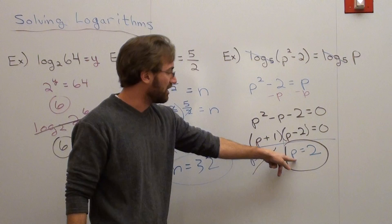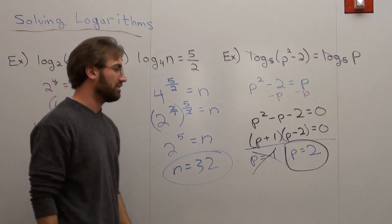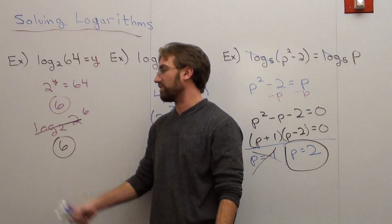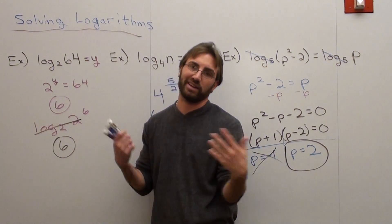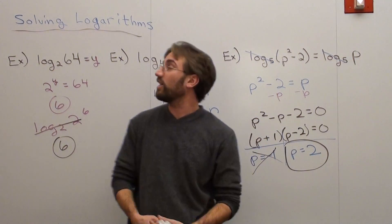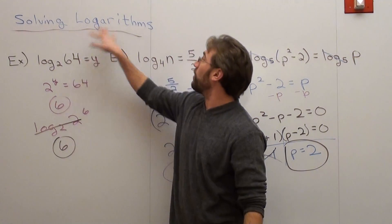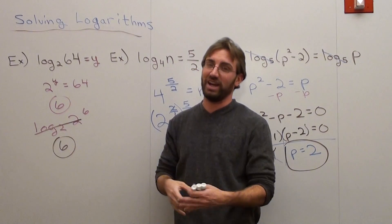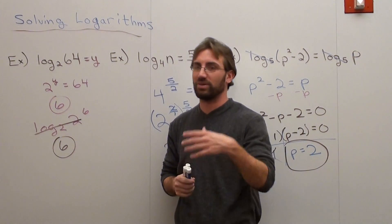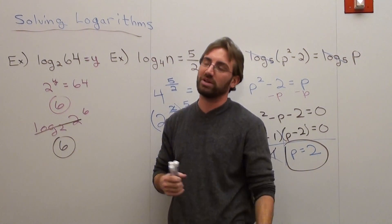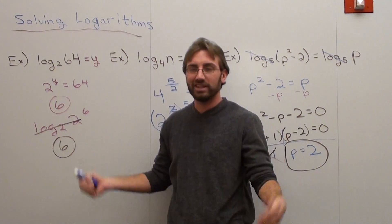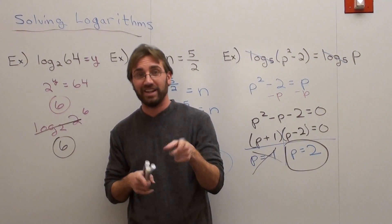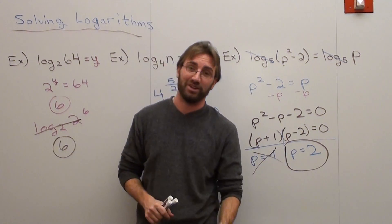So there you go — p equals 2, n equals 32, and the first one simplifies to 6 because there's no variable. That's our solving logarithms. We're going to start using properties next and see how to do that. Students aren't really big fans of it, but you've just got to buy into it and see how it goes. Have a good day — goodbye.